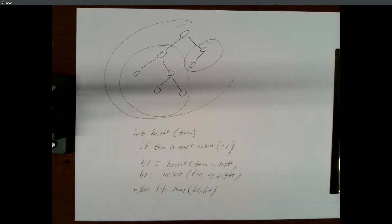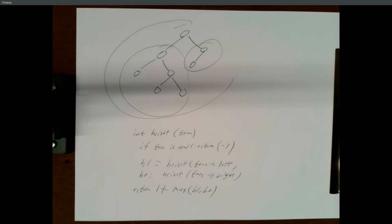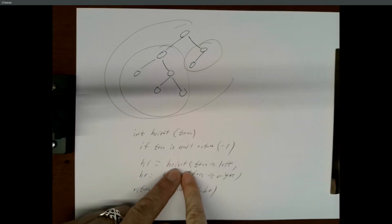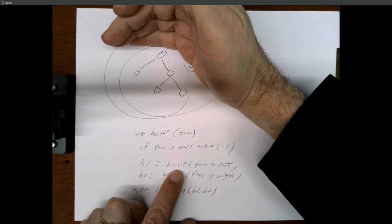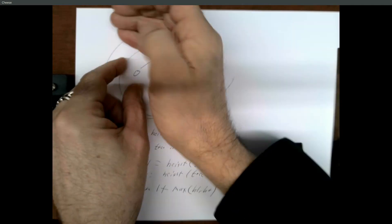And then just return one plus the largest of those two heights. So you almost don't have to write anything — the only math we're doing is right here. Because each time that you make this recursive call to tree left, the first time you're going to try to find the height of this subtree.